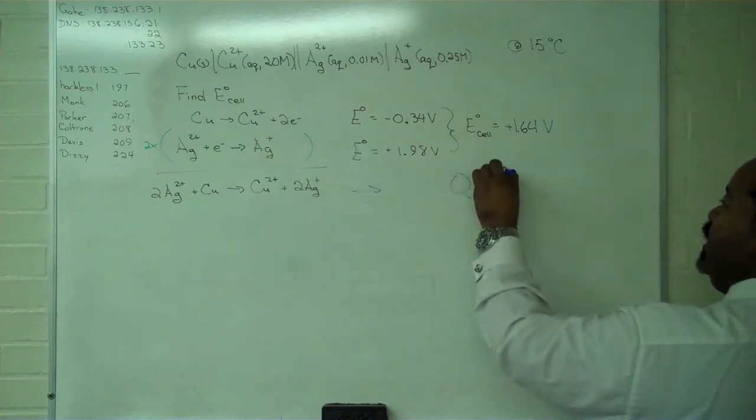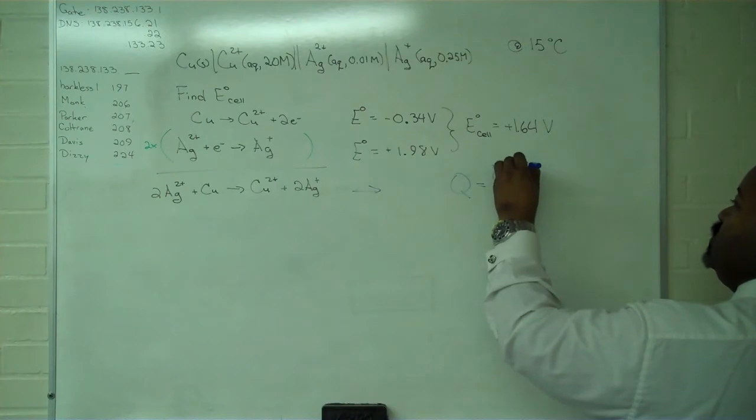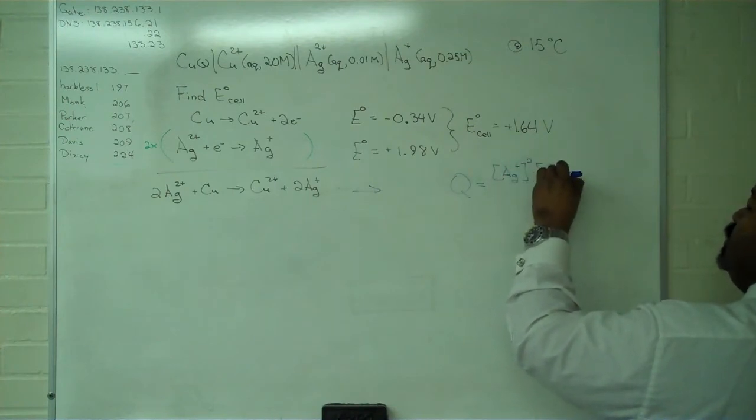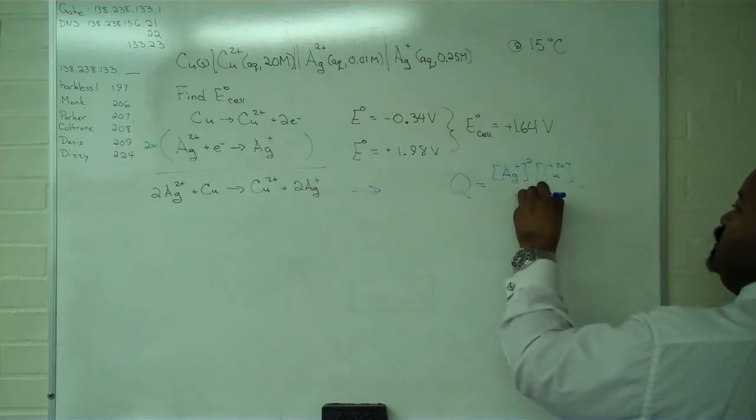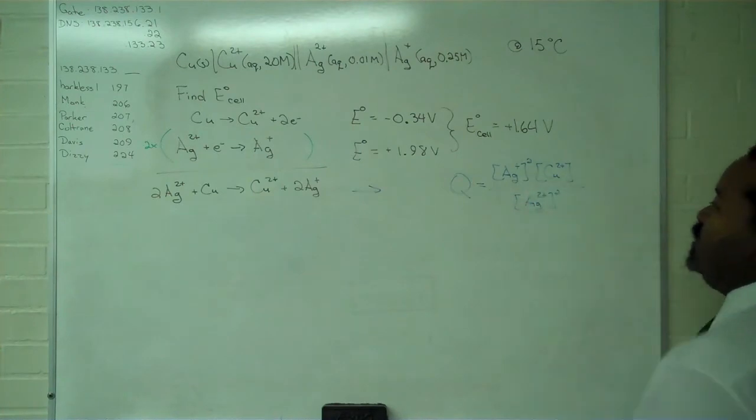We're going to have the silver concentration, silver 1 ions squared, the copper 2 ions, divided by the silver 2 plus squared.